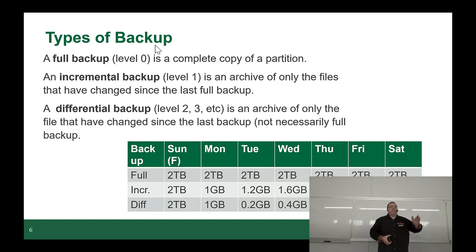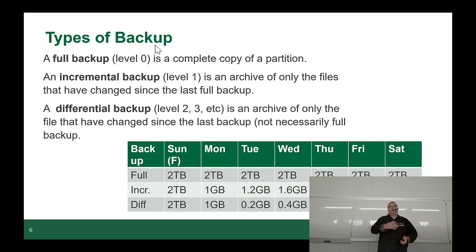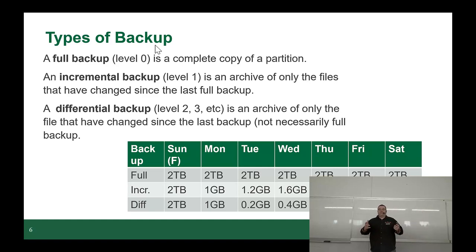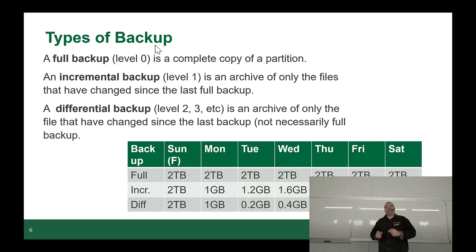Essentially you do a full backup on Sunday. On Monday you do an incremental backup — 100 files changed. On Tuesday you do another incremental — only 20 files changed. However, it's going to include the 100 from yesterday plus the 20 from today. On Wednesday, another 100 file changes, so it's 100 plus 20 plus 100. It's incremental from the full backup. The differential backup starts with a full backup on day one, and then you only keep track of the changes day by day. On day one, 100 files changed — you back up those 100. On day two, only 20 files changed — you back up those 20. On day three, you back up those 100 files.